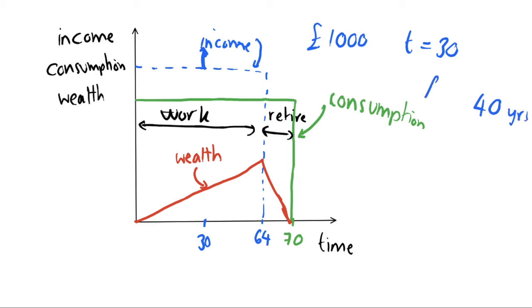Do we splash out and buy, I don't know, buy a new fancy jacket or whatever costs a thousand pounds in period 30? You know, what this life cycle hypothesis says is that we're going to spread that out over the remainder of our life, which will have 40 more years because we live till 70.